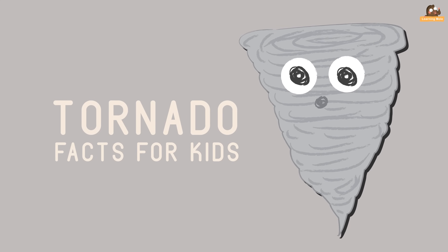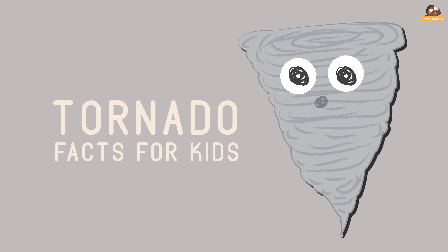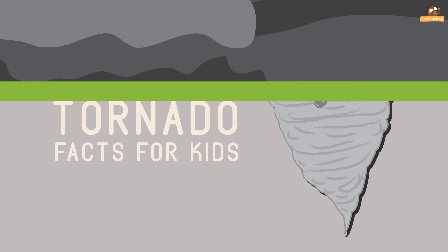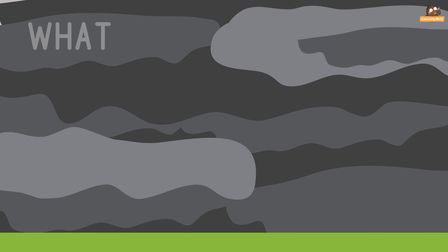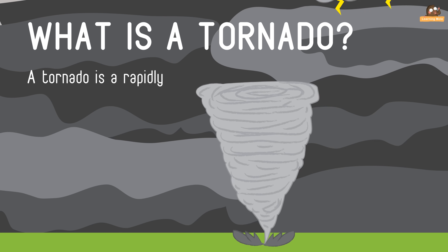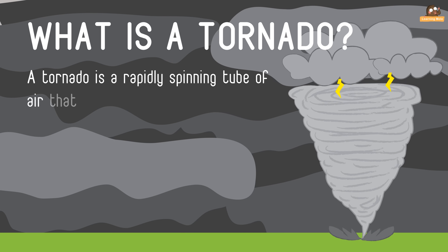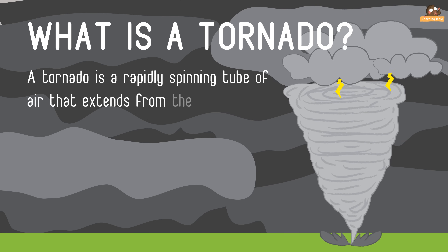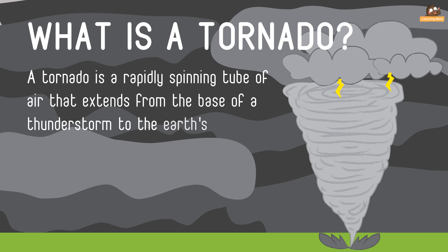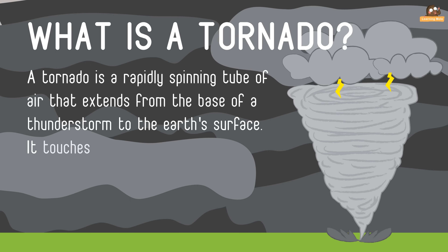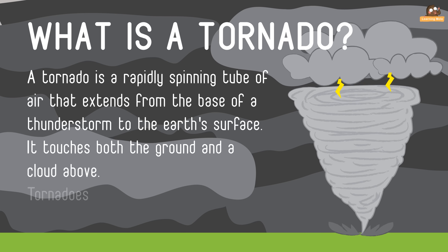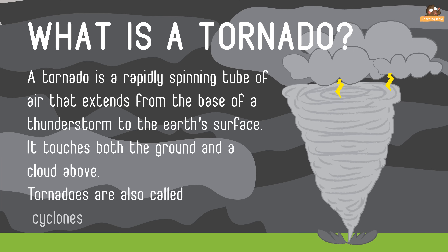Today our video has lots of tornado facts for kids. What is a tornado? A tornado is a rapidly spinning tube of air that extends from the base of a thunderstorm to the earth's surface. It touches both the ground and a cloud above. Tornadoes are also called cyclones or twisters.